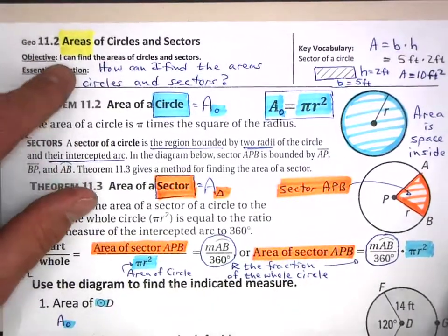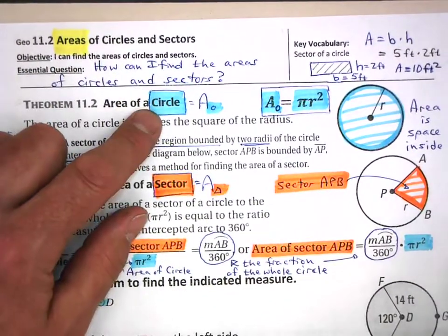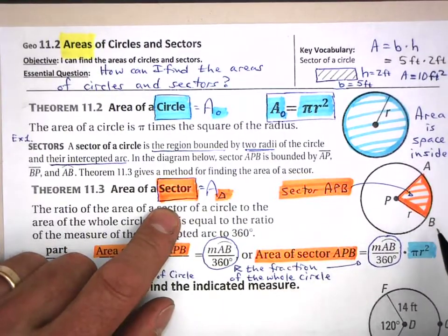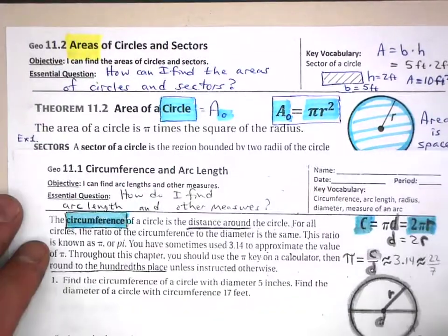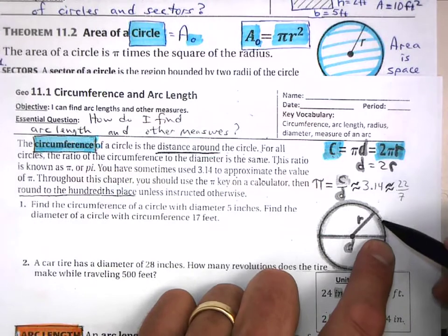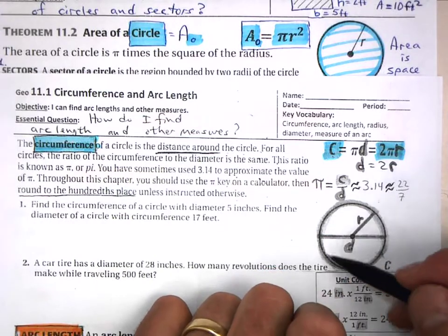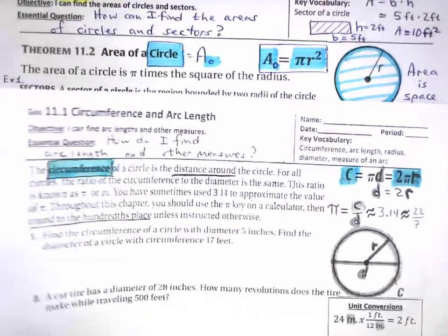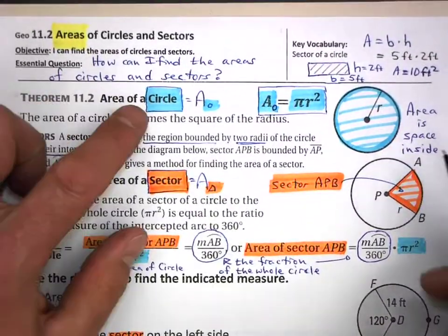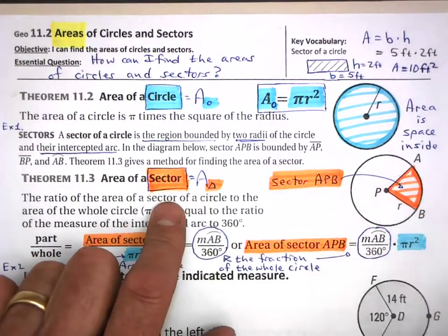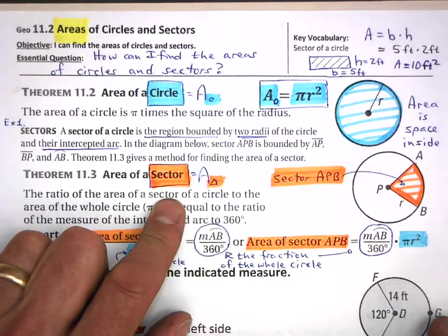We are looking at the areas of a circle, but we also want to do the area of a sector. When we were talking about circumference, we were looking at arc length — the length of part of a circle — whereas here with area, this part of the circle is called a sector.